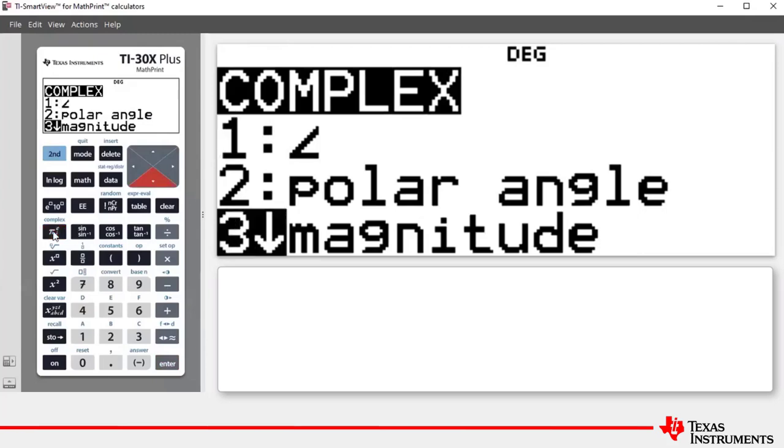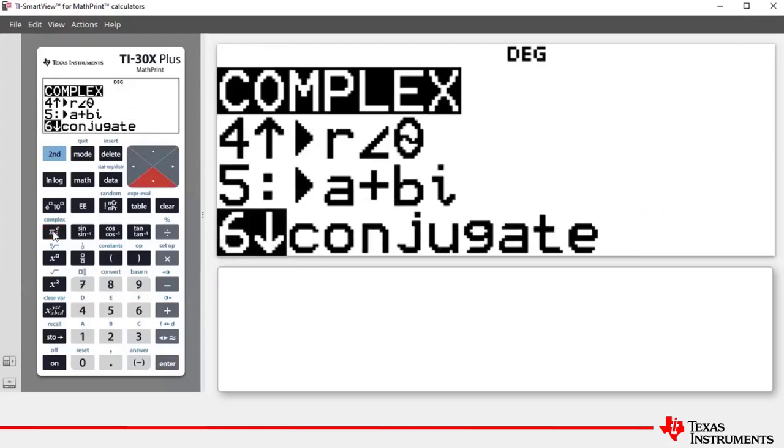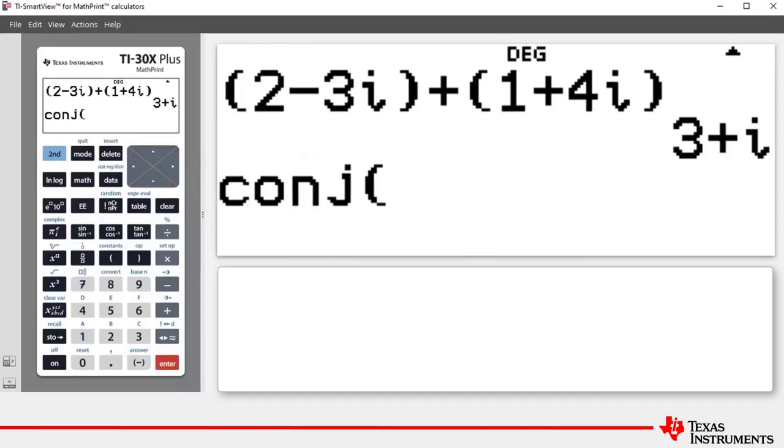If we scroll down to number six, we can see the command conjugate. We can press enter, which pastes that command onto the entry line. We can then press arrow up to highlight three plus i, press enter to bring it down to the current entry line, press the closing bracket key, press enter, and we see that the complex conjugate is indeed three minus i.